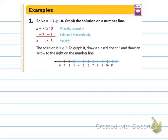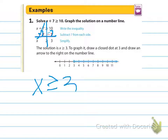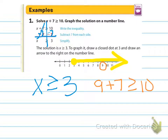Number one: solve x plus 7 is greater than or equal to 10, and graph the solution on a number line. Using our t-chart, we subtract 7 from both sides to get x by itself, giving us x is greater than or equal to 3. Since it's greater than or equal to, that's a closed circle, and the arrow goes to the right. To check, plug in 9: 9 plus 7 is 16, and 16 is greater than or equal to 10. Check!